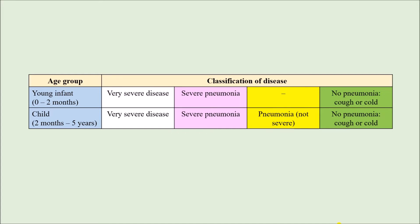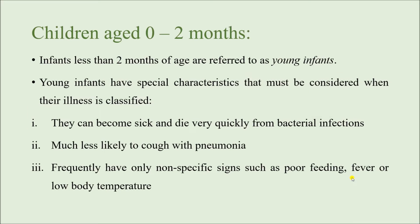As you can see from this table, the classification can be either Very Severe Disease, Severe Pneumonia, or No Pneumonia — Cough or Cold. If you notice carefully, there is no classification such as pneumonia that is not severe in the age group of 0 to 2 months. Any young infant with age less than 2 months is considered a young infant and these young infants have certain special characteristics that we must consider while classifying the disease. For example, in case of bacterial infection the disease can progress and deteriorate very rapidly and it can be even fatal for the child.